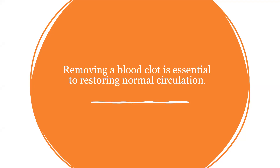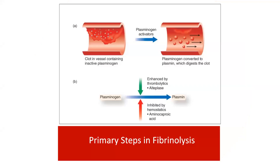Removing a blood clot is essential to restore normal circulation. In fibrinolysis, a clot in the vessel contains inactive plasminogen. Plasminogen activators act on the clot, converting plasminogen to plasmin, which digests the clot. We give patients plasminogen activators to convert plasminogen to plasmin and remove the clot. We can also add thrombolytics such as Alteplase. If a person is bleeding and we need to stop it, we use hemostatics such as aminocaproic acid.